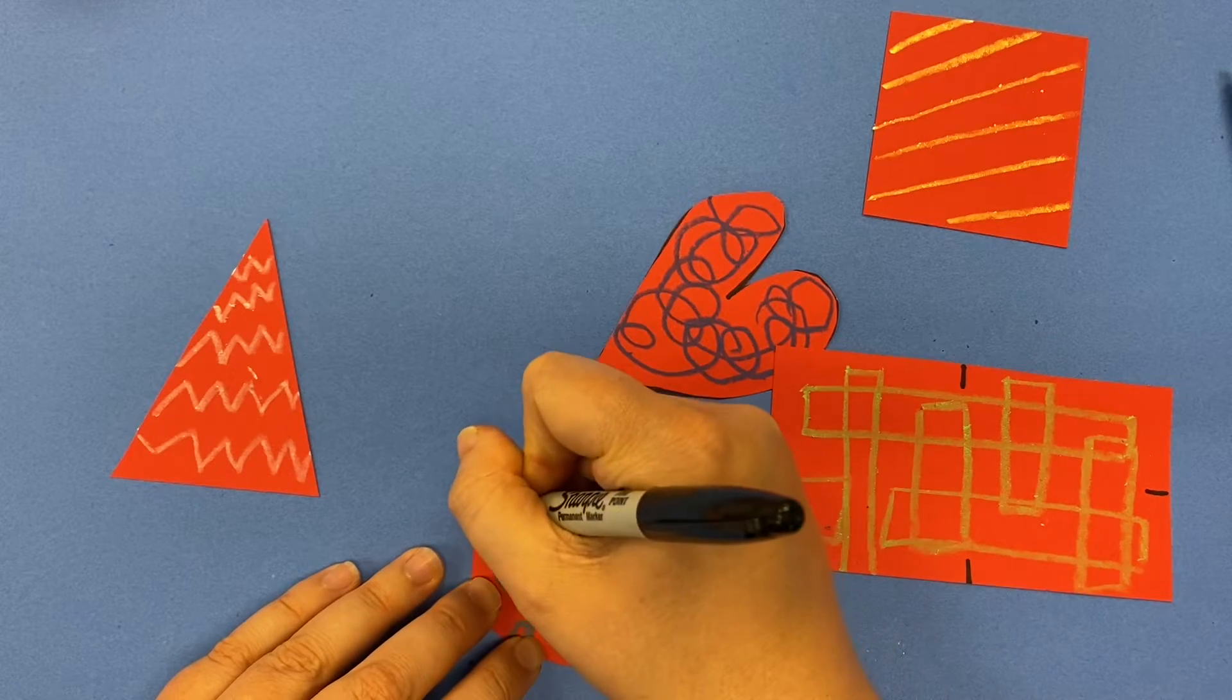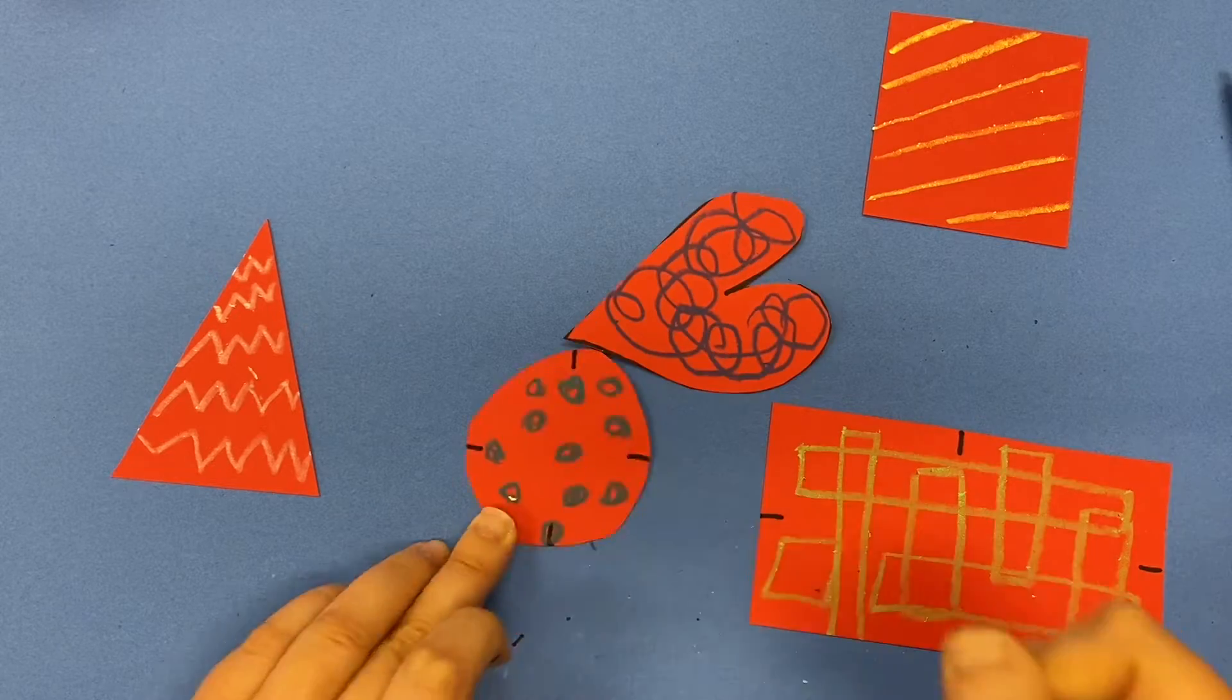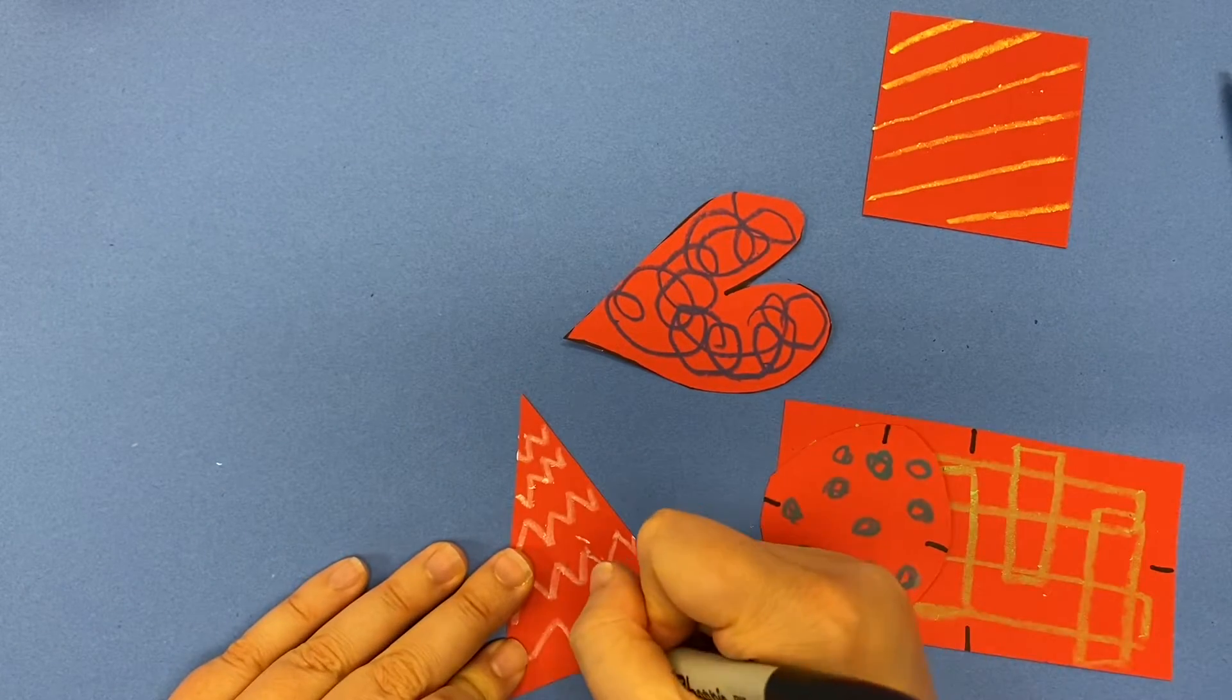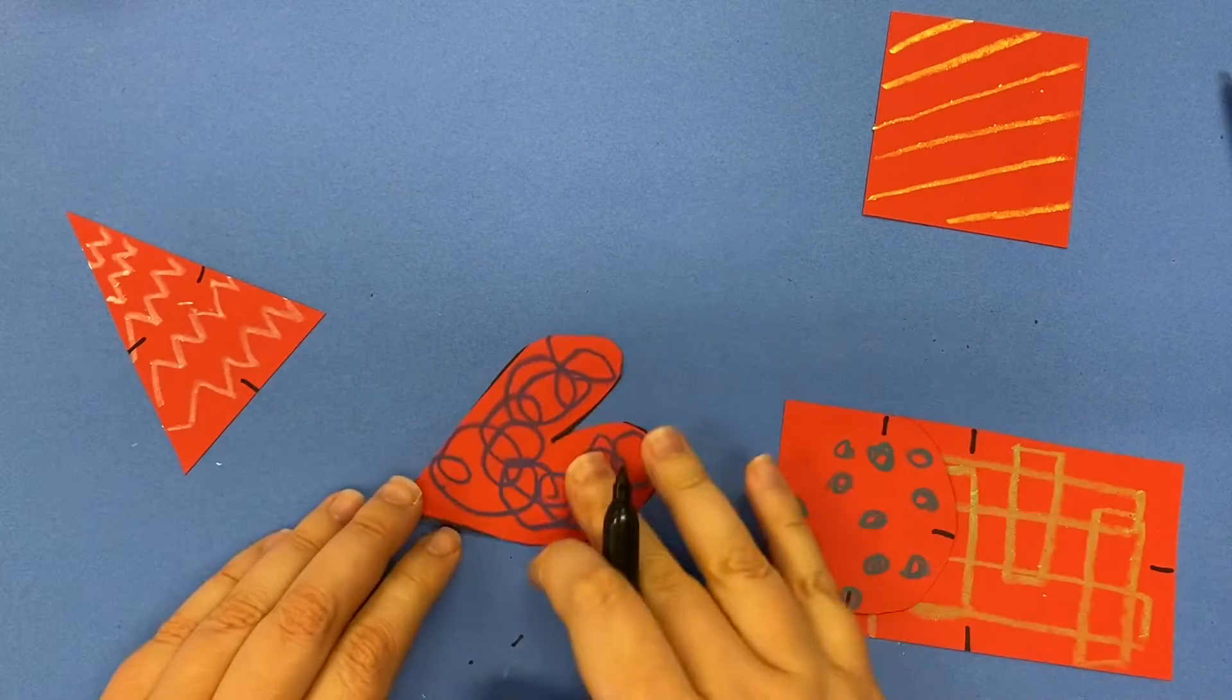And you're only going to do one on each side. So for a circle, just do three. Triangle, do three. And you need to put it right in the middle.